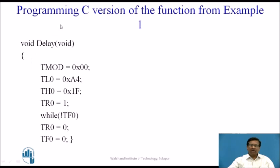This is the C version of the function studied in the previous slide. The delay function loads TMOD with 0x00. TL0 and TH0 are loaded with the values we found (A4H and 1FH respectively). The timer is started by setting TR0 = 1. We wait for TF0 to become 1, and once it does, TR0 is reset and TF0 is reset for the next operation.